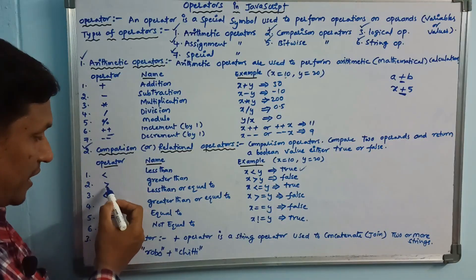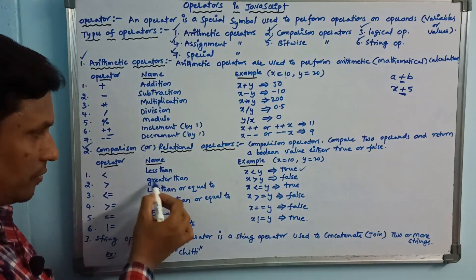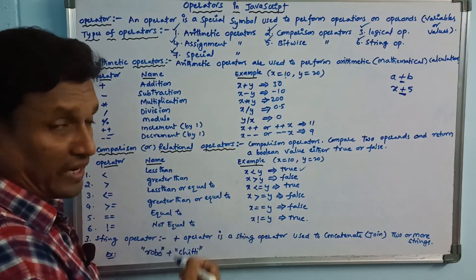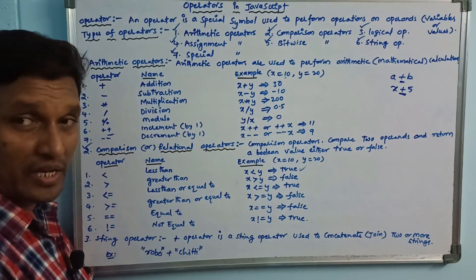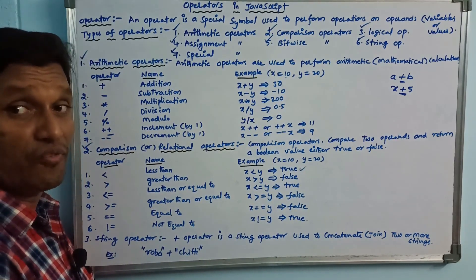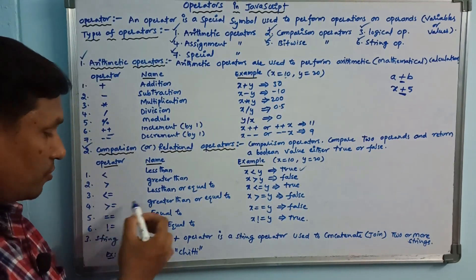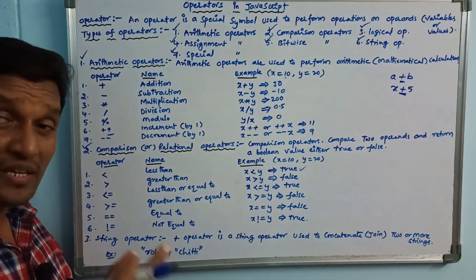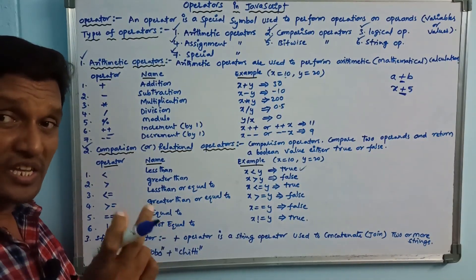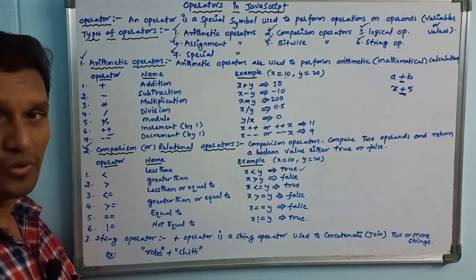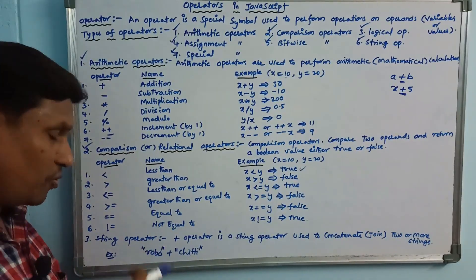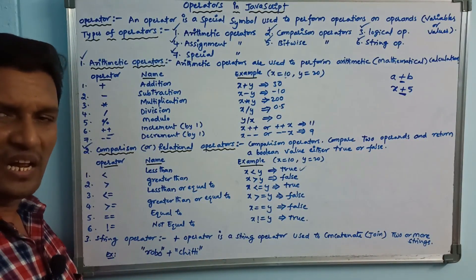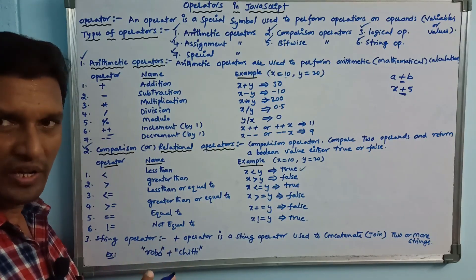Next operator is greater than. x is greater than y — x value 10, y value 20 — condition is false. Other operators include less than or equal to, greater than or equal to, equal to, and not equal to. Equal to means two variables are the same, condition is true. Not equal to — if x is 10 and y is 20, condition is false.